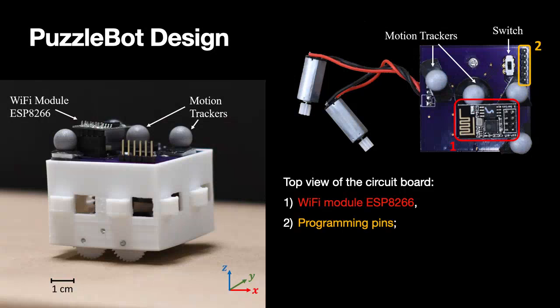The VICON indoor localization system will be able to track each individual robot and send the poses to the central computer.